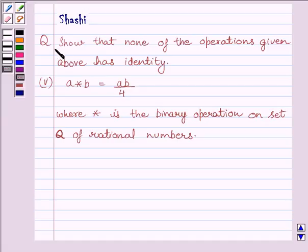Question is, show that none of the operations given above has identity. Fifth part of the previous question is, A star B is equal to AB upon 4, where star is the binary operation on set Q of rational numbers.